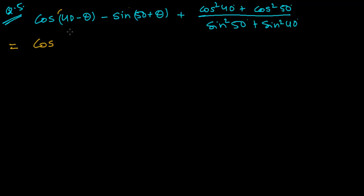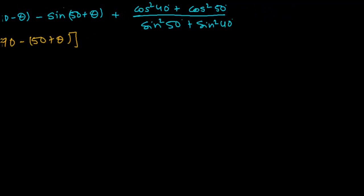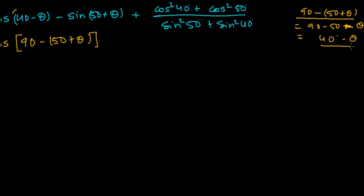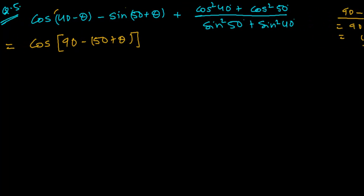So I'll write cos(40 minus theta) as cos(90 minus (50 plus theta)). Why? Because 90 minus (50 plus theta) equals 90 minus 50 minus theta, which is 40 minus theta. That is why I write cos(40 minus theta) in that form. Then minus sin(50 plus theta) stays as it is.